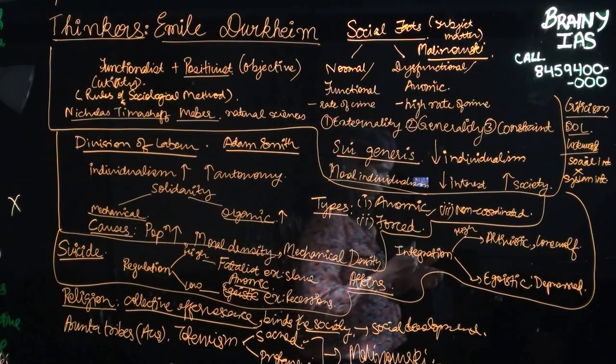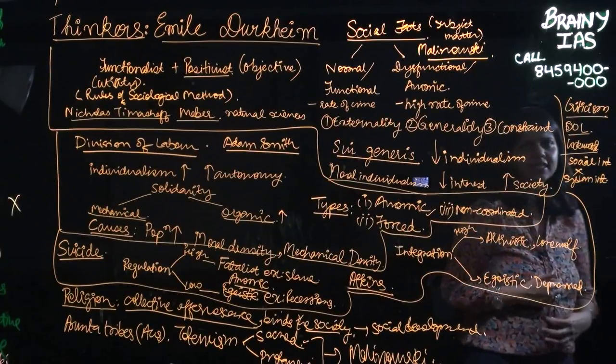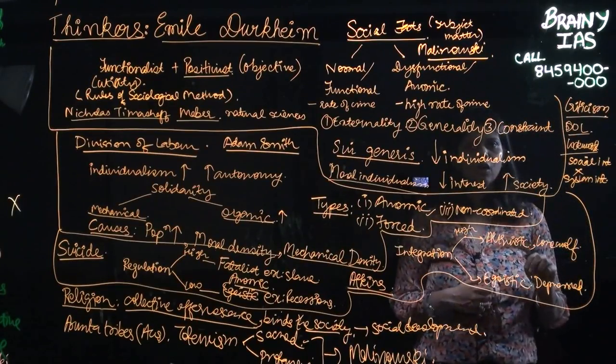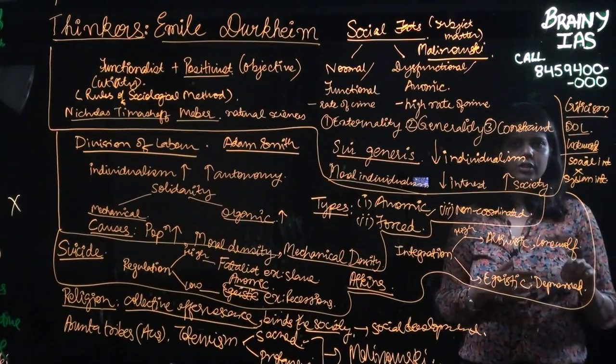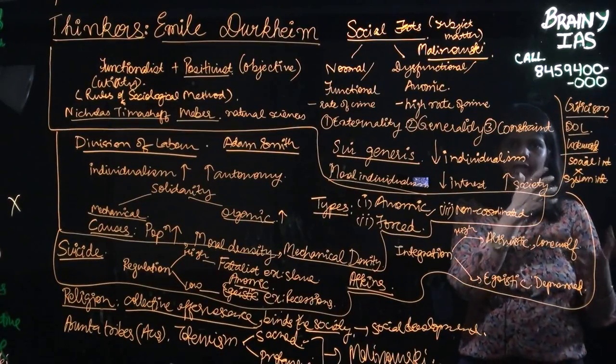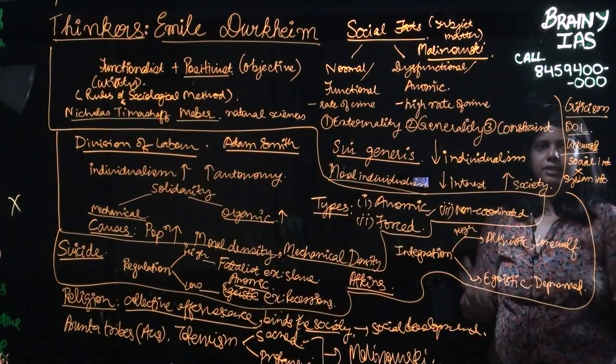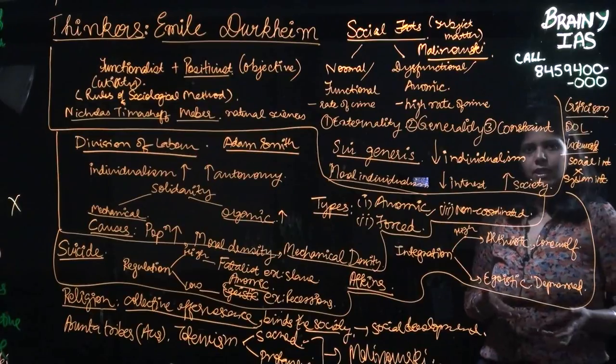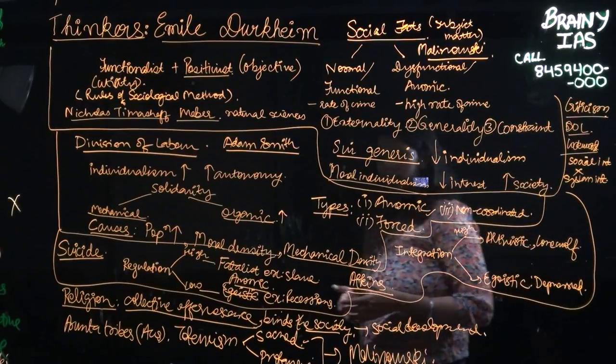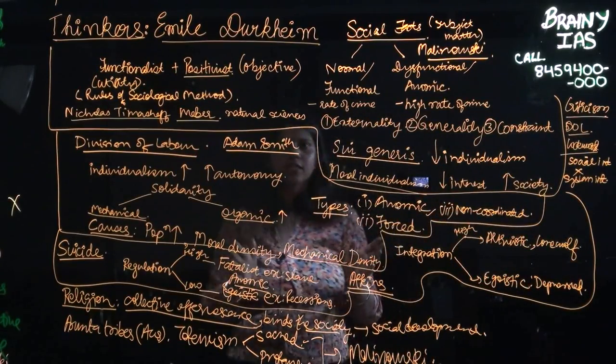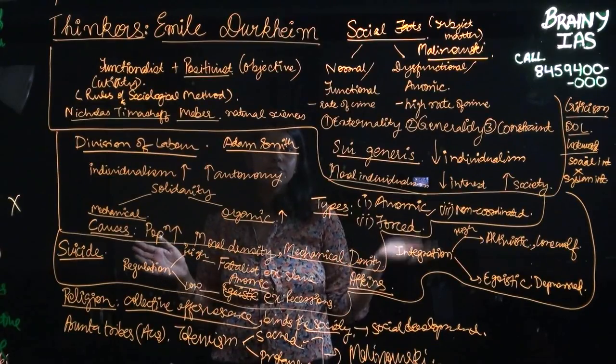But Weber very clearly says that it is the religious beliefs of the Protestant Christian which happens to lead to a capitalist society, a capitalist economic ecosystem. So those are largely the differences how Weber differs from Durkheim.